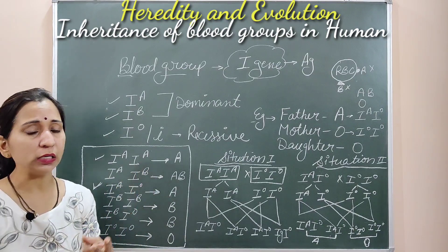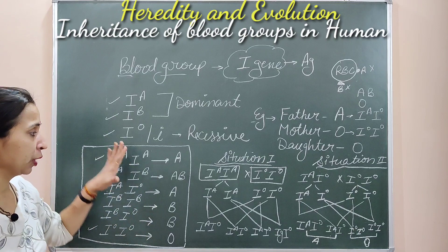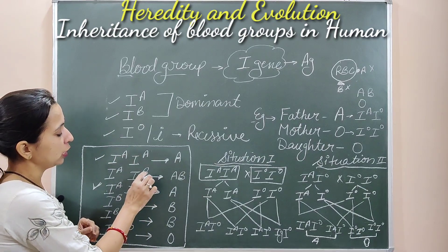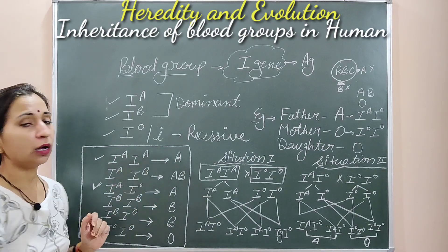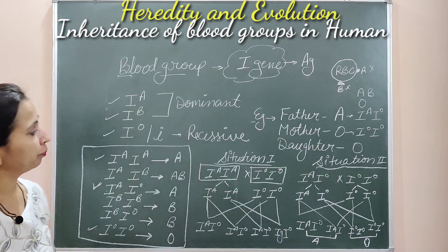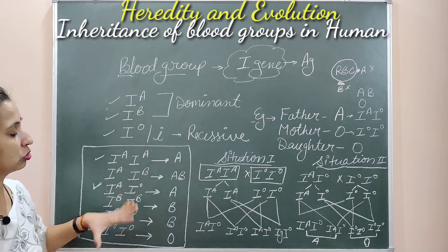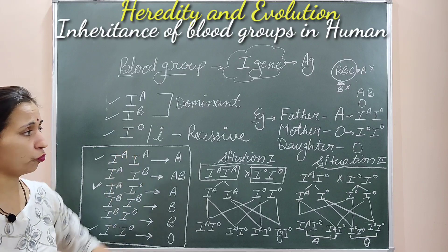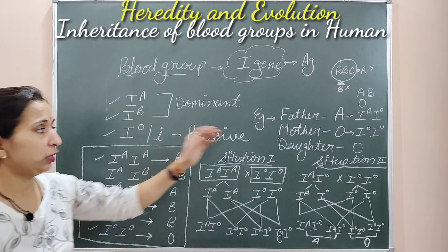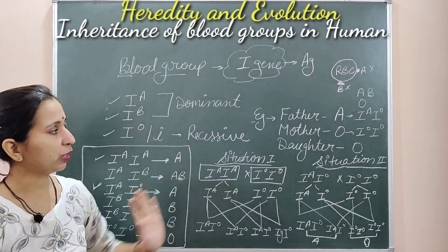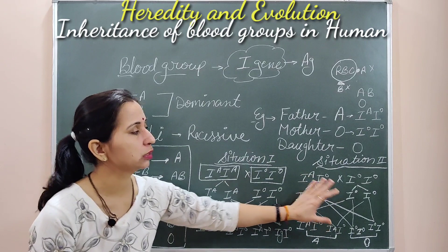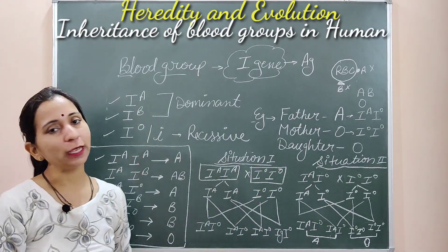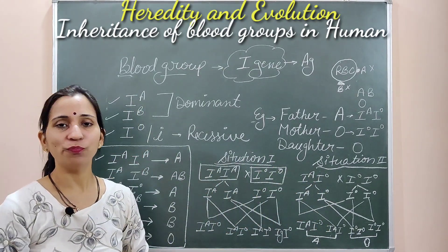Only two alleles are present in each individual. These are the possible situations in which alleles can be present in a human being, and we discussed the transmission of these genes to offspring with the help of an example. That's all about the inheritance of blood groups.